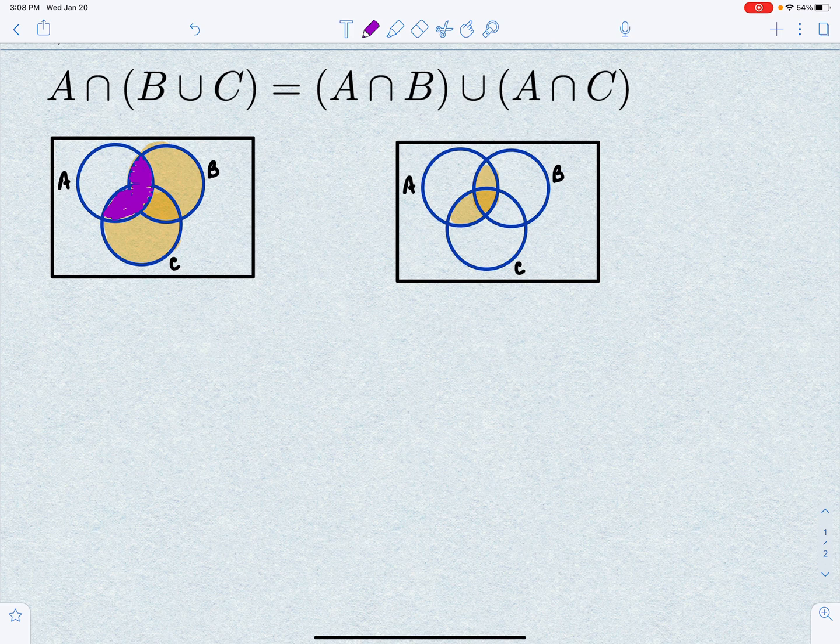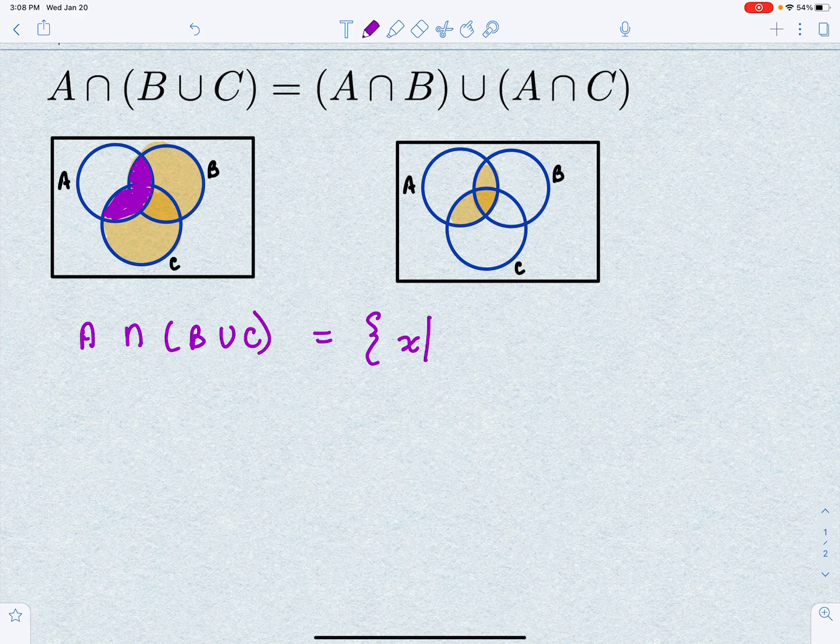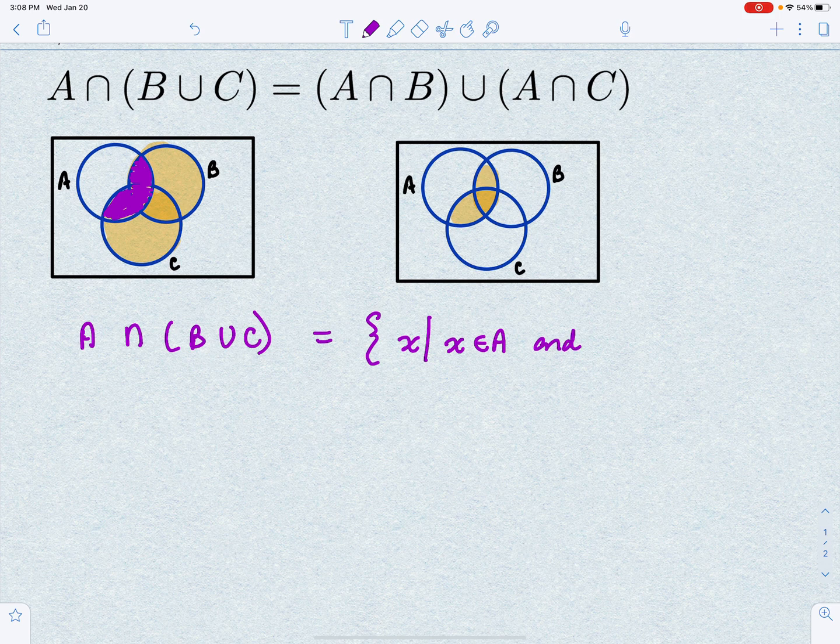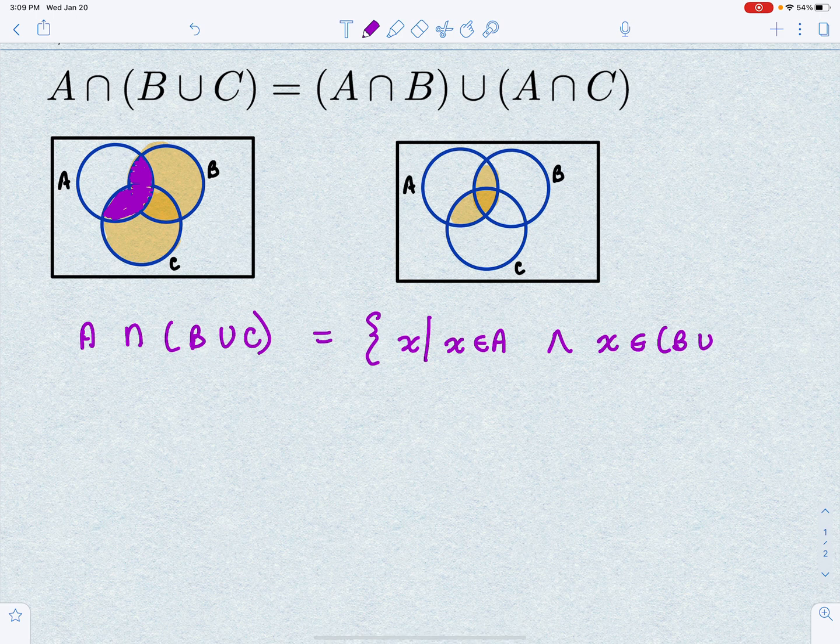So what we're going to do is say that A intersect B union C is the set of all X such that X is in A, and I'm going to use the logical connective and, X is an element of the set B union C.